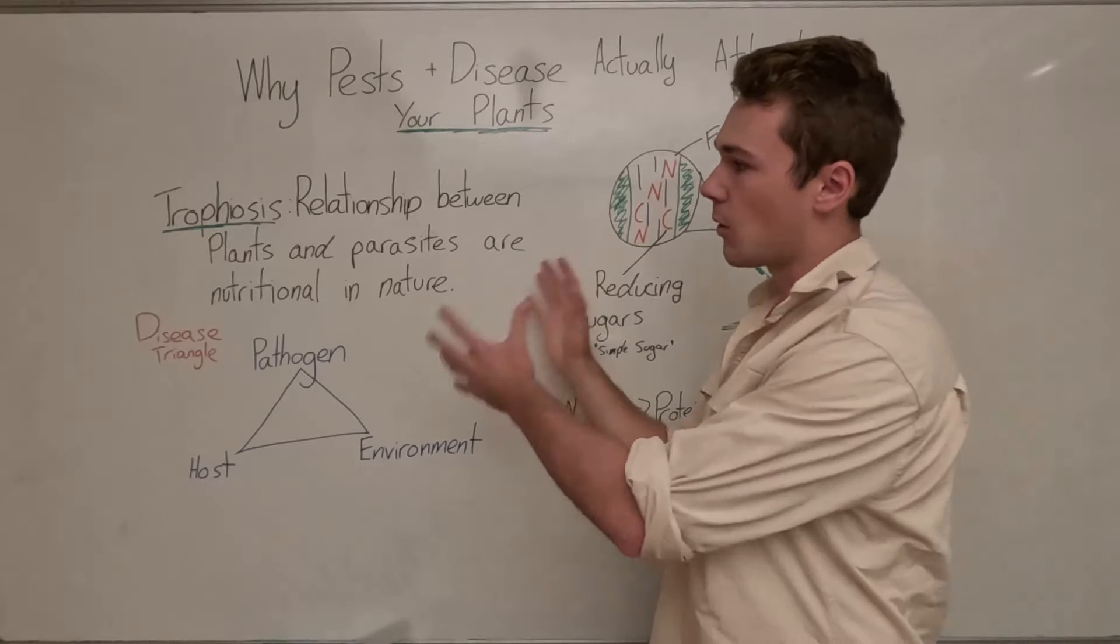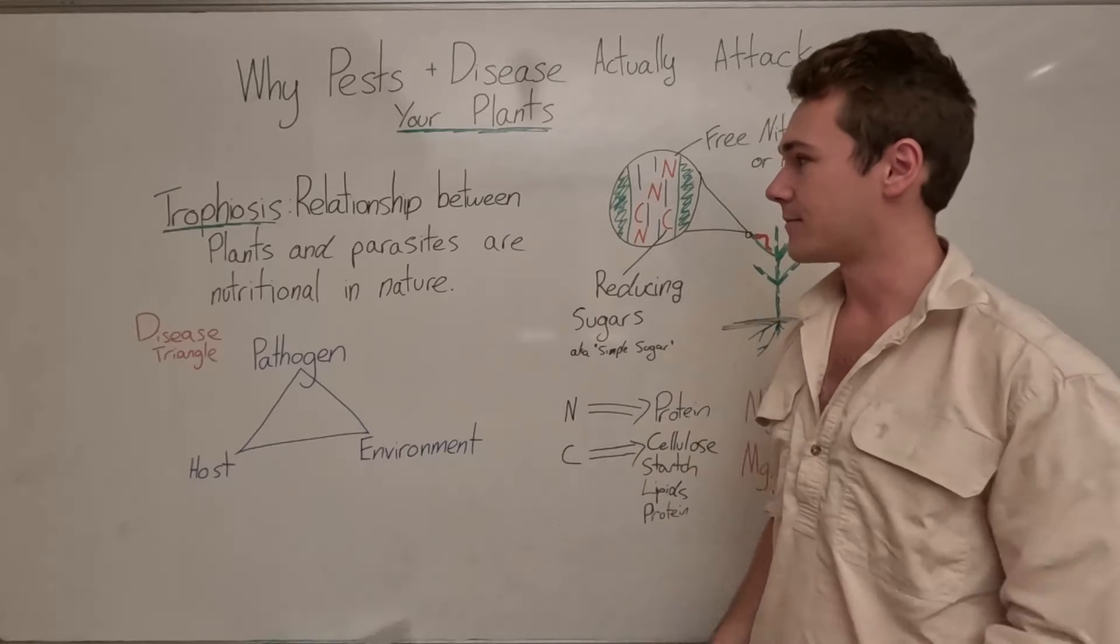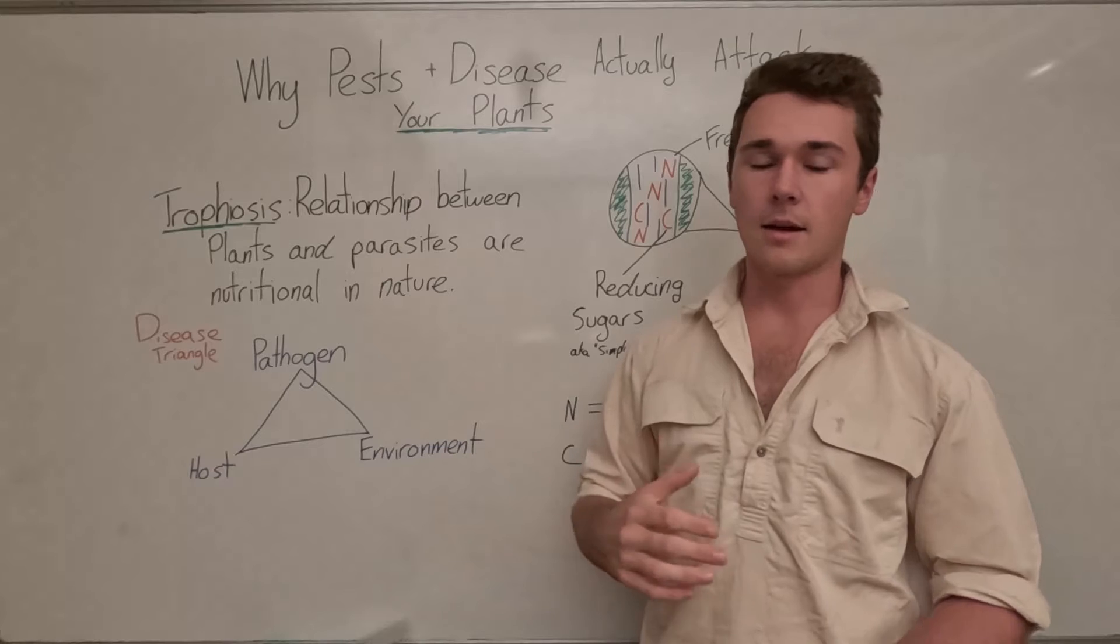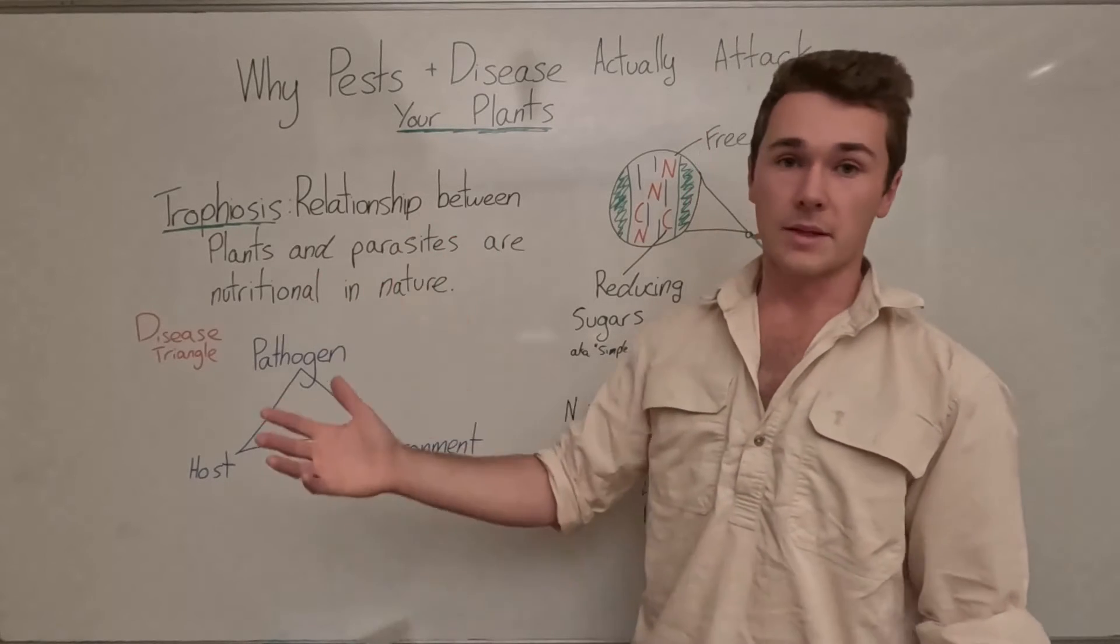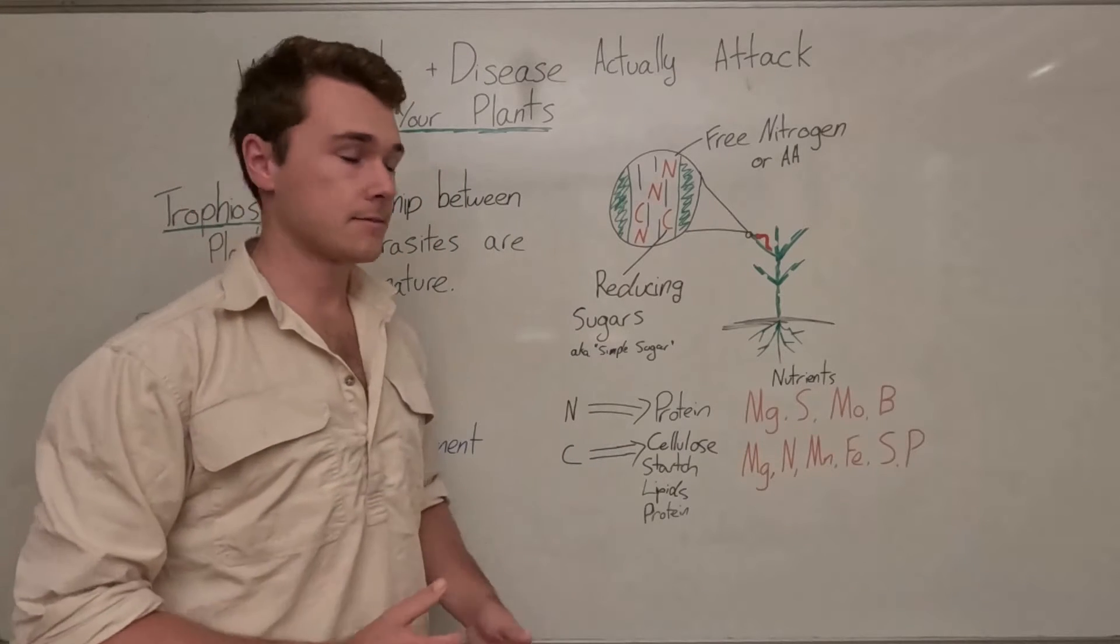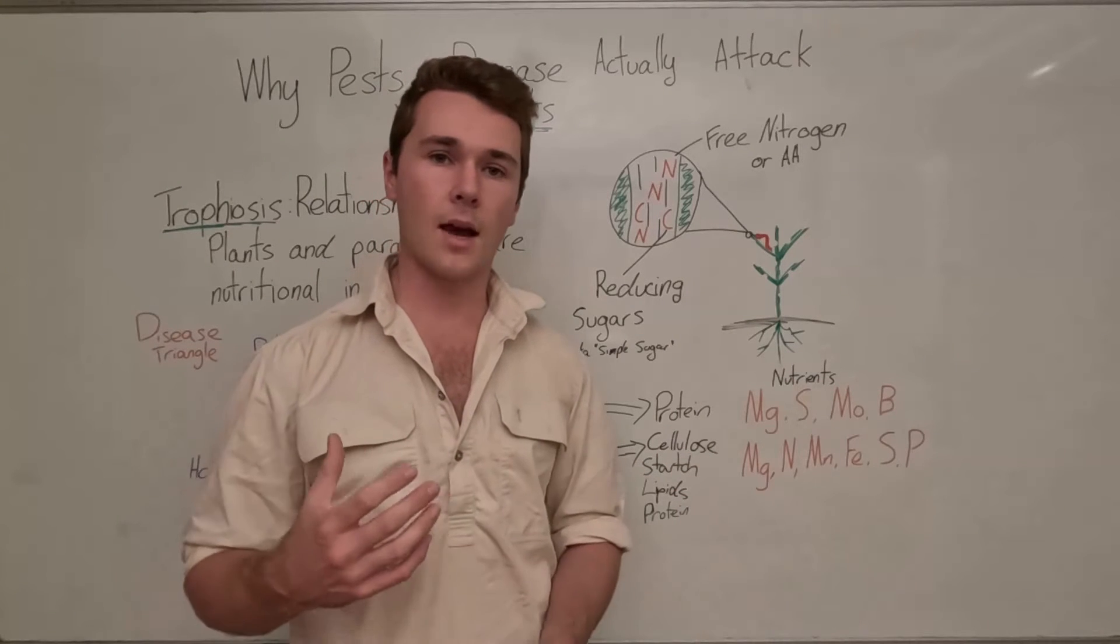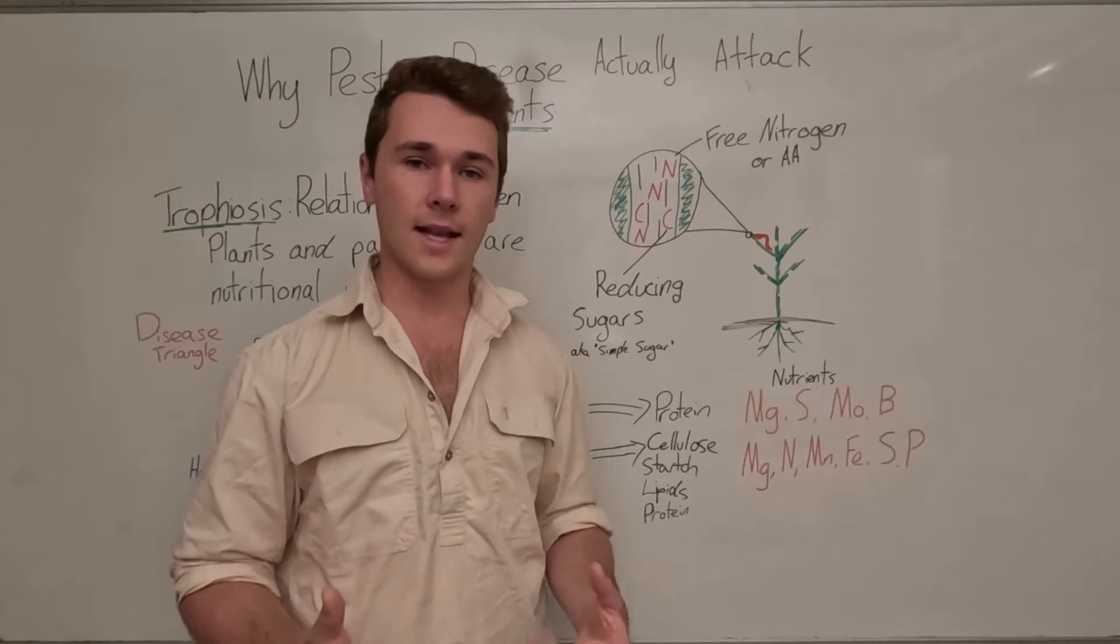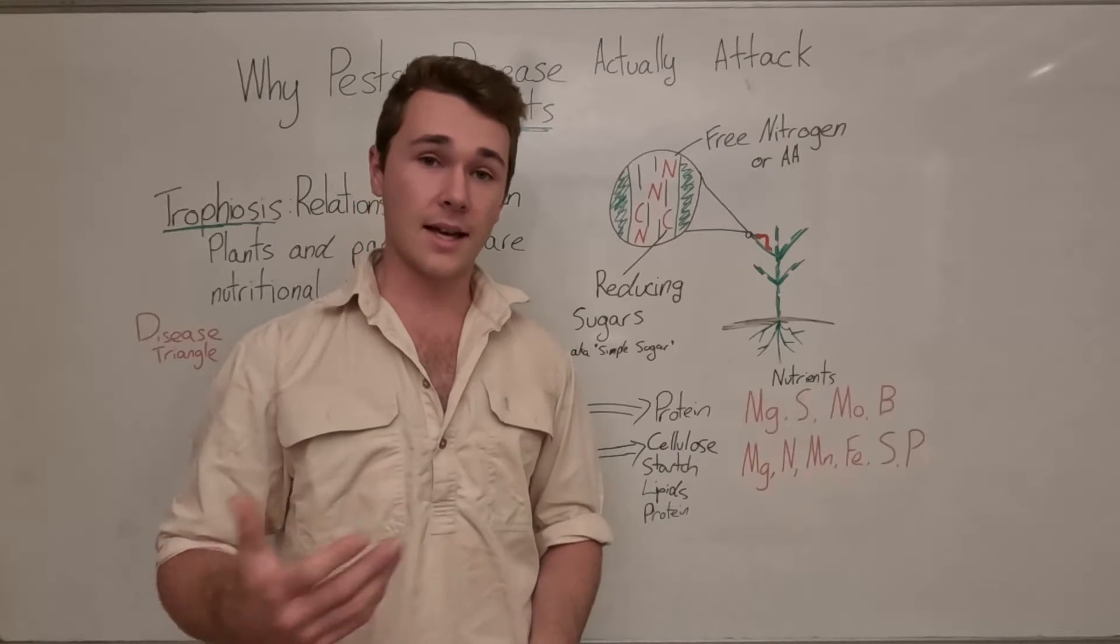So really, we're talking about developing a host that is unsuitable to the pathogen. And the reason why a parasite, and a parasite is anything that gets a positive benefit from our plants at the plant's detriment, so pest or disease, attack our plants is because they can feed off the plant. Now, I think one of the best ways to think about this concept is to think about how we can't eat grass or pasture, but cows can.